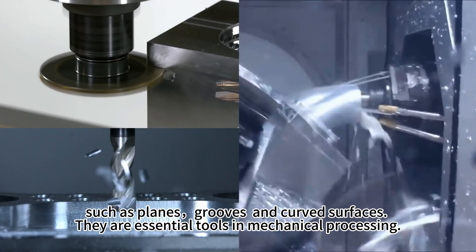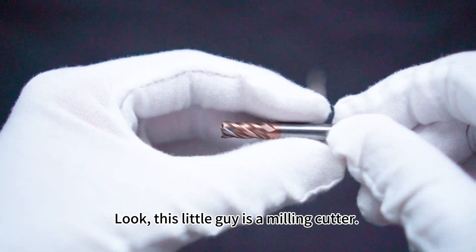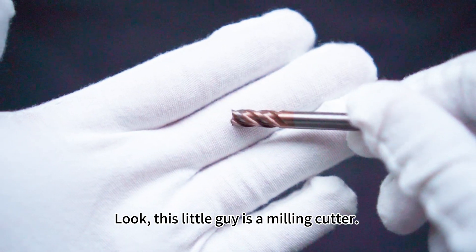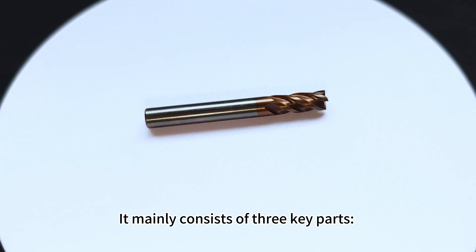Look, this little guy is a milling cutter. It mainly consists of three key parts: the shank, the body, and the cutting edge.